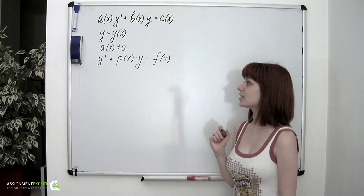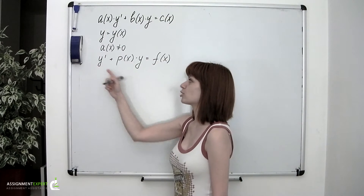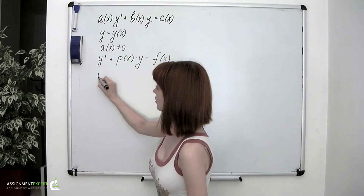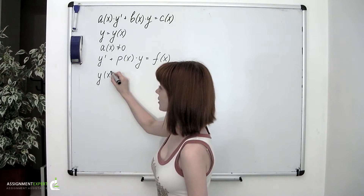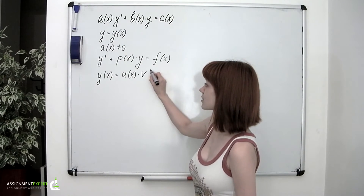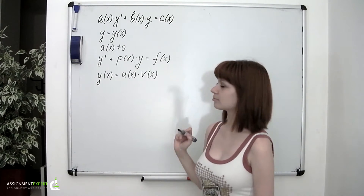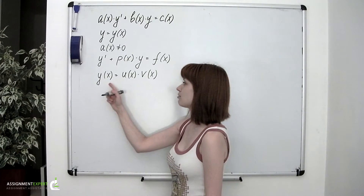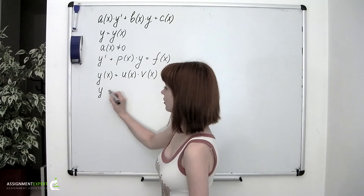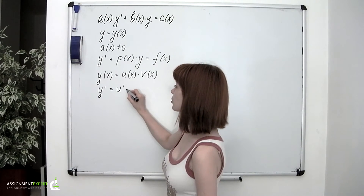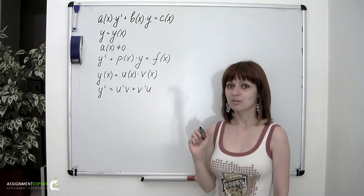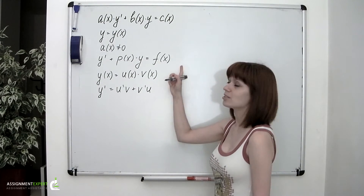It was discovered that it is very convenient to search for the solution to such equations in the form of a product of two functions: y(x) equals U(x) times V(x). We also remember that the derivative of a product is found by the following formula: y' equals U'V plus V'U.